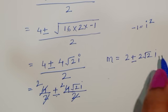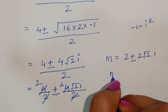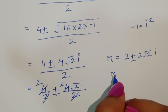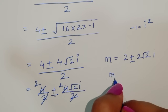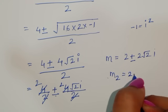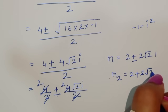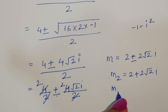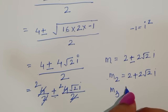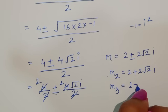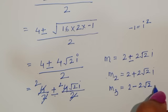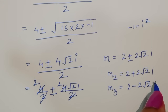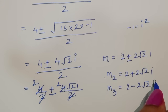So the three values of m are: m1 equals minus 3, m2 equals 2 plus 2 root 2 i, and m3 equals 2 minus 2 root 2 i.